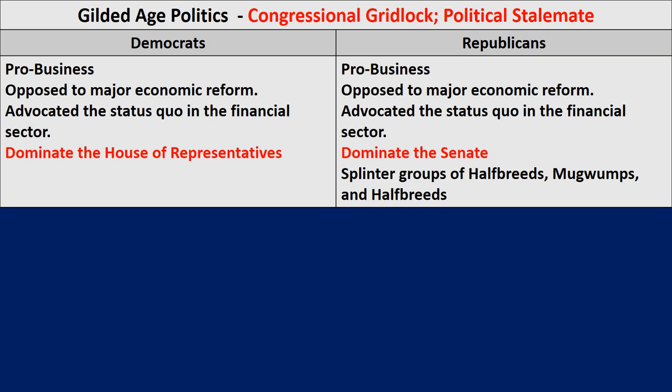After the Civil War — Gilded Age politics. Not a lot happens; there's not a lot of major news in the late 1800s. Democrats and Republicans still exist, but notably both are pro-business and both opposed to major economic reform — both advocated the status quo in the financial sector. During this time period, Democrats dominated the House of Representatives while Republicans dominated the Senate, which meant not a lot of legislation was passed. These are kind of your forgettable presidents. Even the Republicans were a little divided — half-breeds, stalwarts, and mugwumps — showing divisions within their own party.